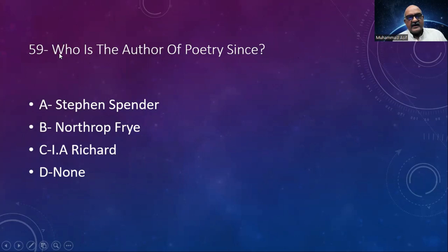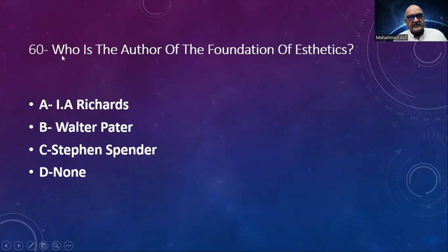Number 59: Who is the author of Poetry Since 1939? Options: Stephen Spender, Northrop Frye, I.A. Richards, none. The answer is Stephen Spender. Number 60: Who is the author of The Foundations of Aesthetics? Options: I.A. Richards, Walter Pater, Stephen Spender, none. The answer is I.A. Richards.